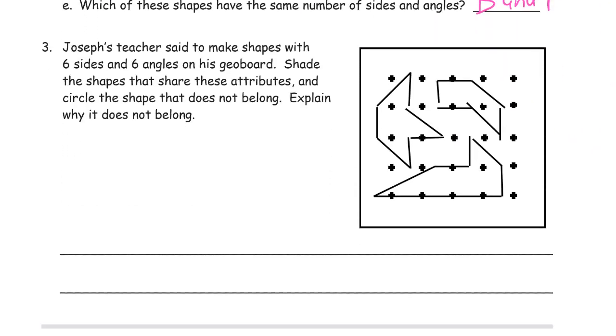Joseph's teacher said to make shapes with six sides and six angles on his geoboard. Shade the shapes that share these attributes and circle the shape that does not belong. Explain why it does not belong. So this attribute word is just, that's just something that you can say. It's a way you can describe something is an attribute. So I have black shoes. That's an attribute. If a shape has six sides, that's an attribute. If it has six angles, that's another attribute. If it's closed, that's another one. If it's flat, that's another attribute. So there's lots of, an attribute is just a way to describe something. Or something, what something has that you can say about it.